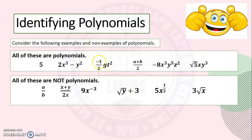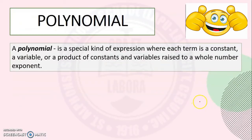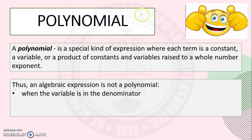Now, based on the examples and non-examples of polynomials, what is a polynomial? A polynomial is a special kind of expression where each term is a constant, a variable, or a product of constants and variables raised to a whole number exponent. An algebraic expression is not a polynomial when the variable is in the denominator — for example, a over b. If there is a variable in the denominator, that algebraic expression is not a polynomial.